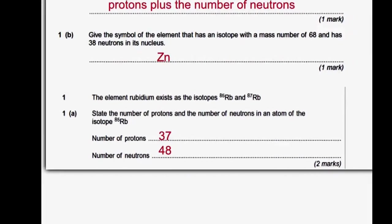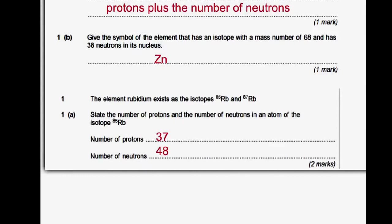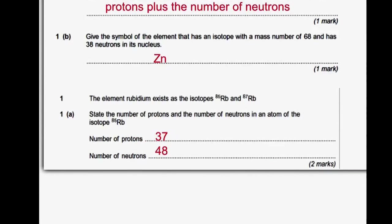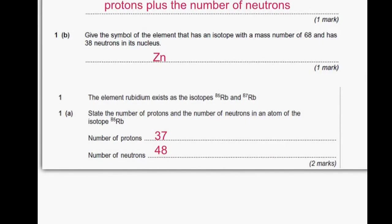This question asks for the number of protons in this rubidium isotope. The number of protons is always going to be the same for an element. If you look up on the periodic table, rubidium has 37 protons. Whatever isotope of rubidium, it's always going to have 37 protons. To work out the number of neutrons, take the mass number 85 minus the number of protons, which gives you 48 neutrons.